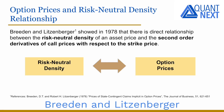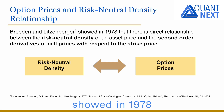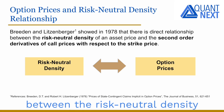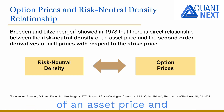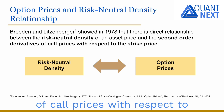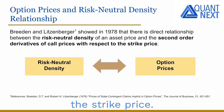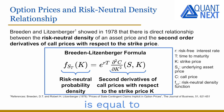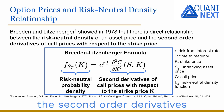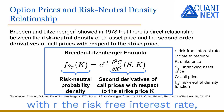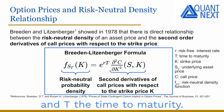Breeden and Litzenberger showed in 1978 that there is a direct relationship between the risk-neutral density of an asset price and the second-order derivatives of call prices with respect to the strike price. The risk-neutral density at the strike price K is equal to the second-order derivative of the call price at K times e^(rT), where r is the risk-neutral interest rate and T is the time to maturity.